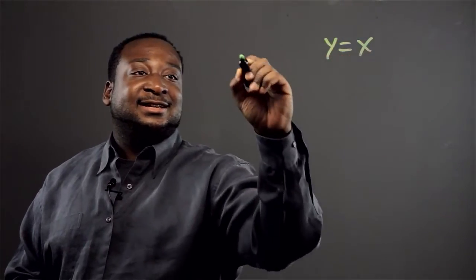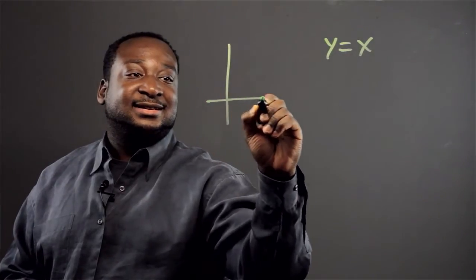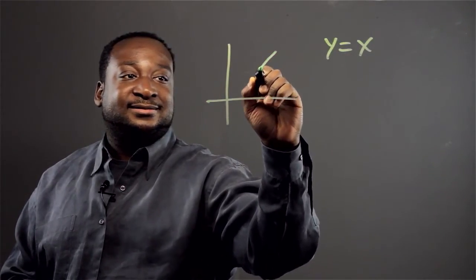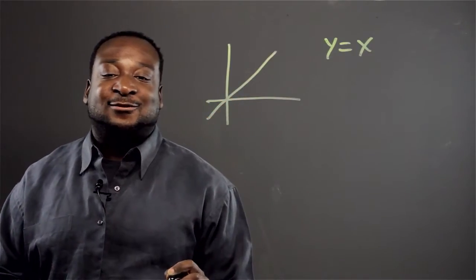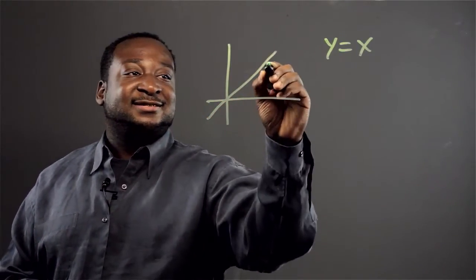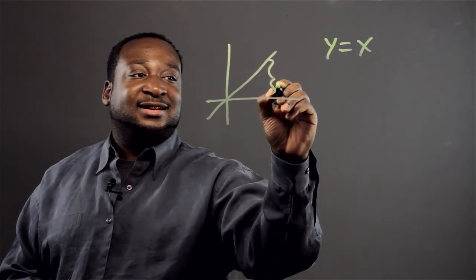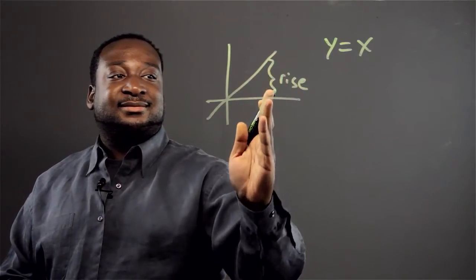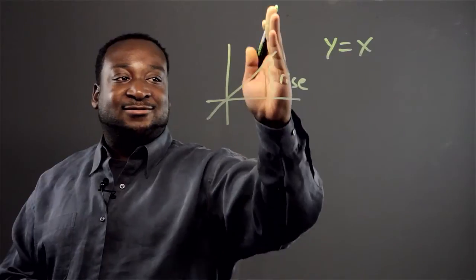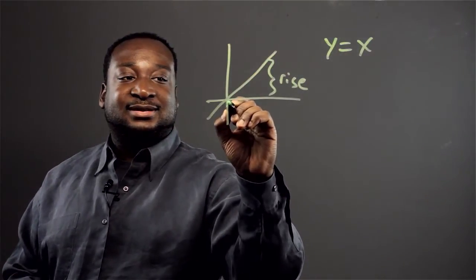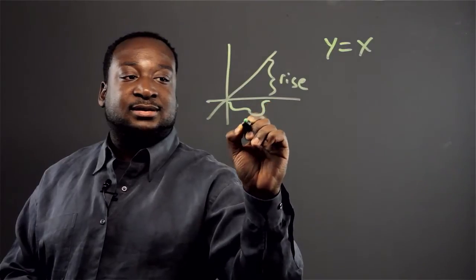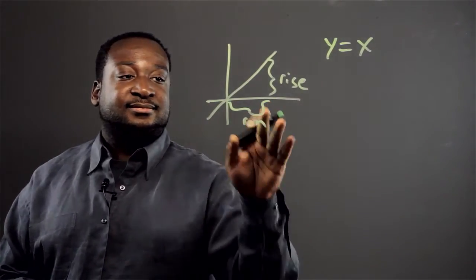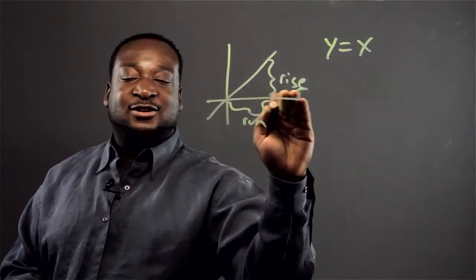Let's say we have the line y equals x and draw that. It's like this. Now, what the slope is, it's the ratio of the rise, how far the line rolls over the run, how far the line moved over.